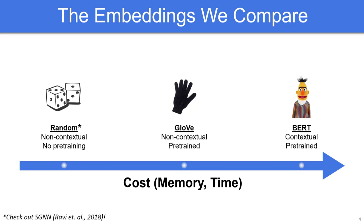Despite BERT's representational power, we amazingly observed in industry-scale experiments that the much cheaper random and GloVe embeddings could match the performance of contextual embeddings on a variety of tasks. This observation motivated our study to better understand where contextual embeddings are particularly useful.